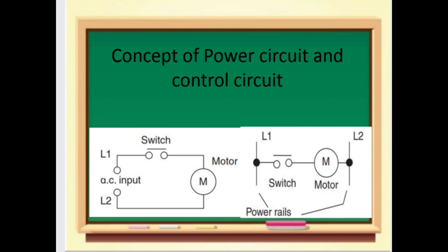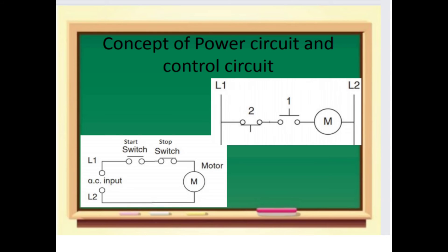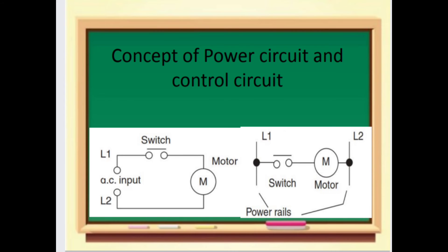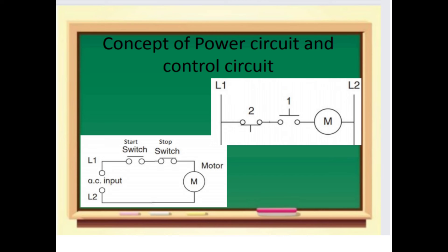This is the diagram of the control circuit and power circuit. In this diagram, there is a switch with rails L1 and L2 — this represents the power circuit. The other portion represents the control circuit. These diagrams show both the power circuit and control circuit together.